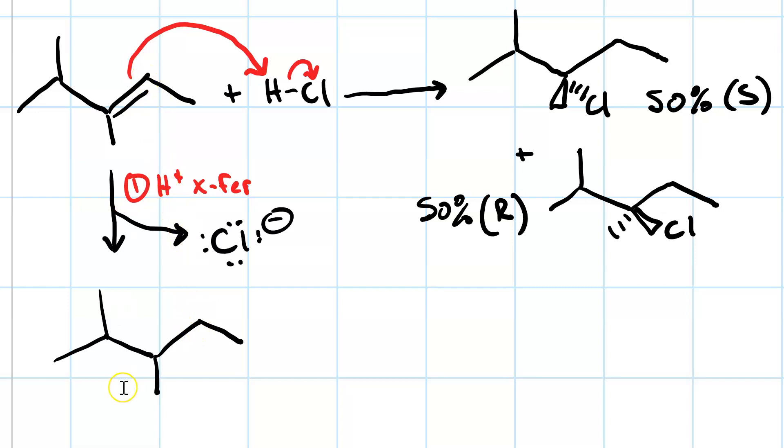But it's going to specifically add to the one on the right, because that gives us a tertiary carbocation. The carbocation you form in this step is always going to be the more substituted or more stable one.